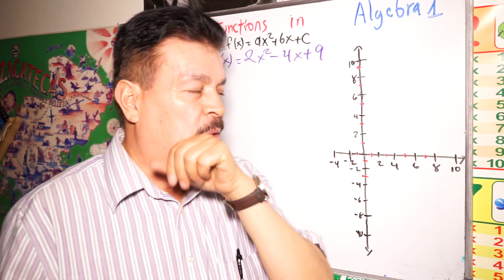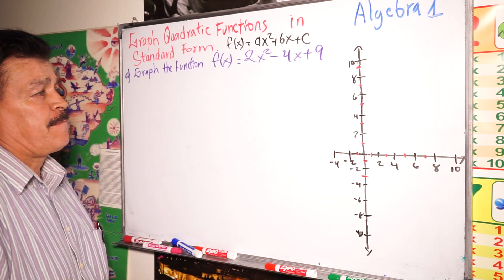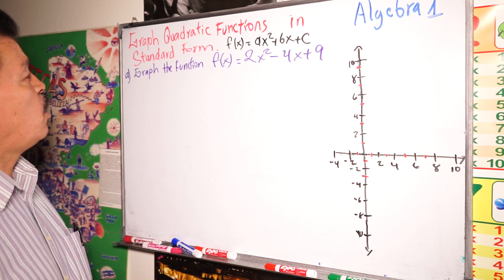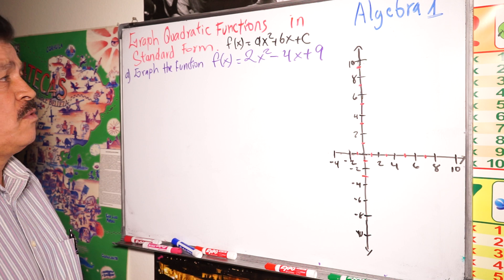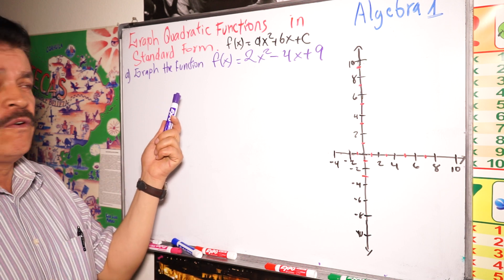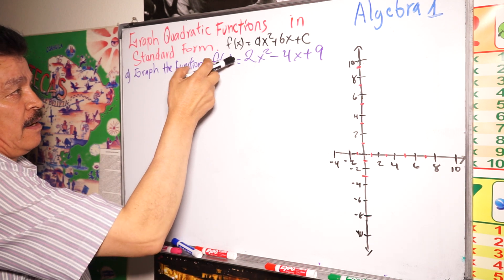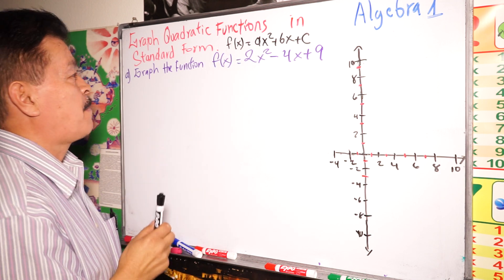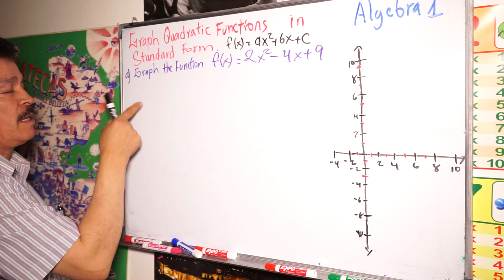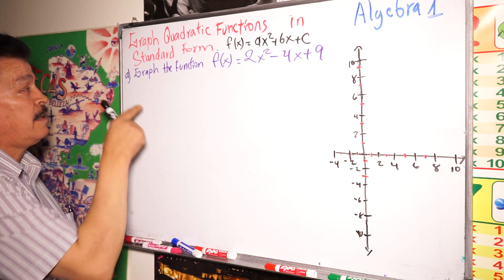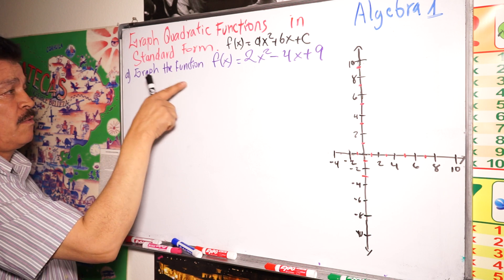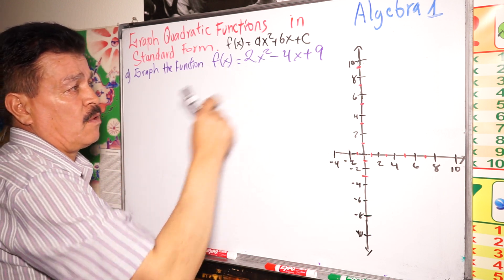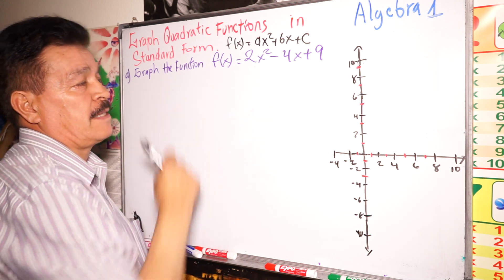Welcome to Algebra 1. Today I'm going to teach you this topic: graph quadratic function in standard form — f(x) equals ax squared plus bx plus c. We have this problem here that we have to solve later: graph the function f(x) equals 2x squared minus 4x plus 9.